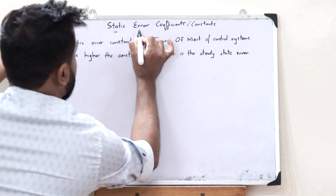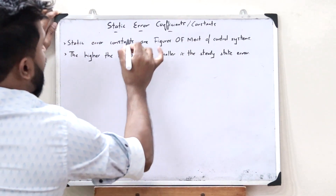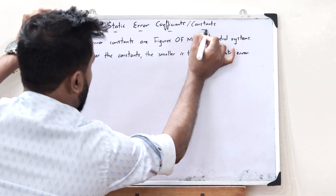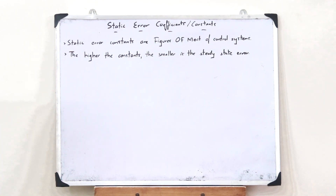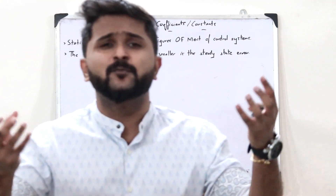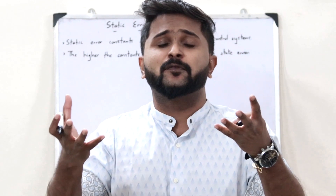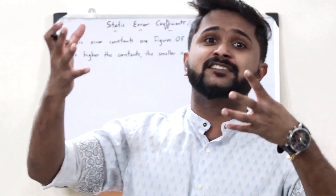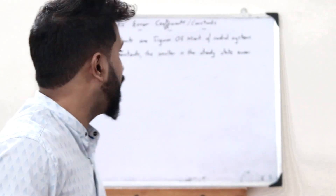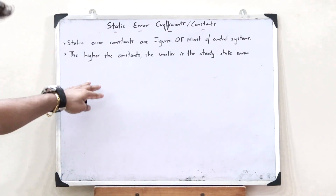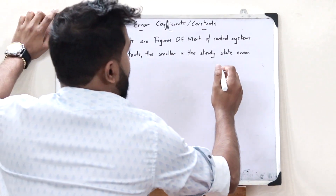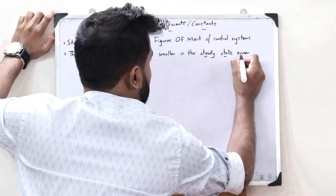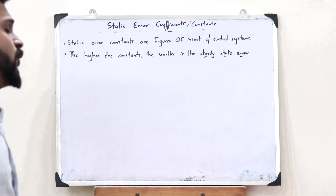Static error coefficients or static error constants are basically figures of merit of a control system. Figures of merit means they are just numerical parameters which are used for the purpose of representing the performance or the efficiency of a particular control system. That is simply what you refer to as static error coefficients. The higher the value of these constants, the smaller is the value of the steady-state error of that particular control system.